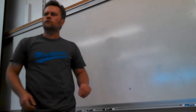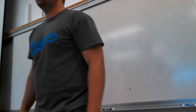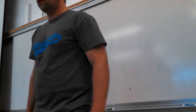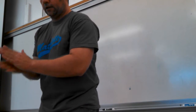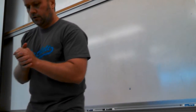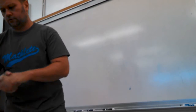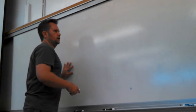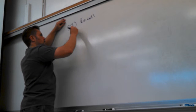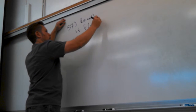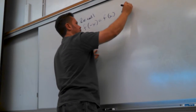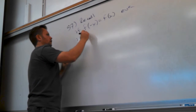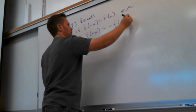This is section 28, page 165, number 57. This is one about even and odd. So recall: if f of negative x equals f of x, it's even. If f of negative x equals negative f of x, it's odd.